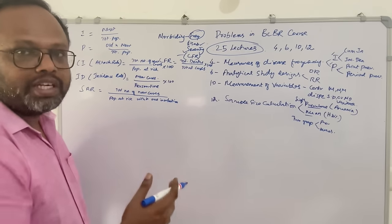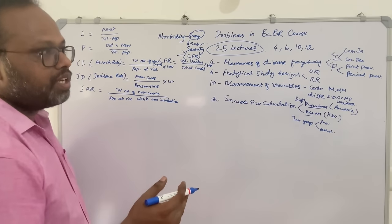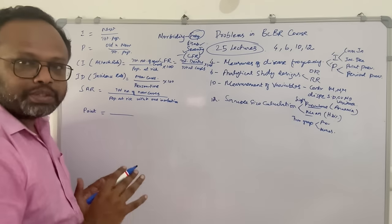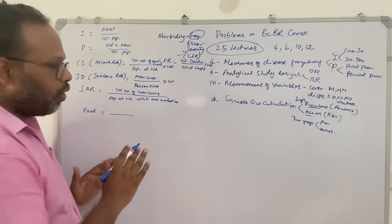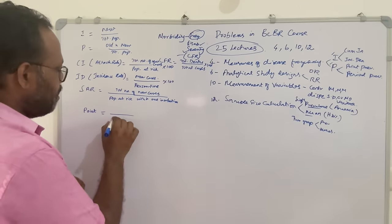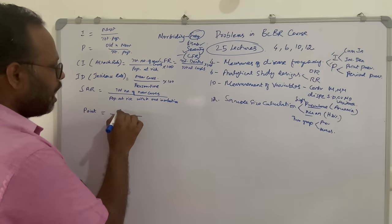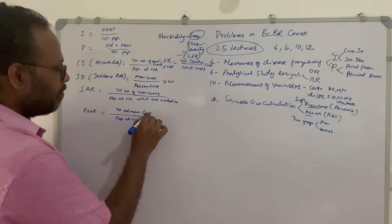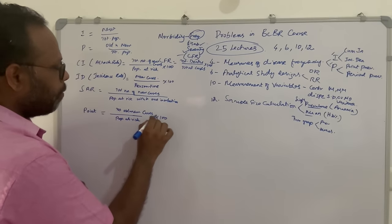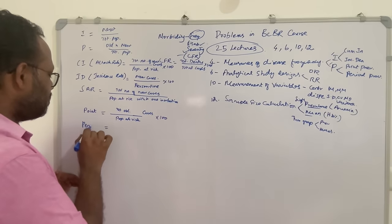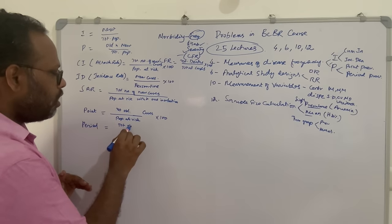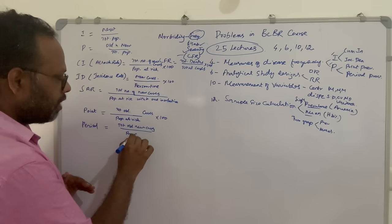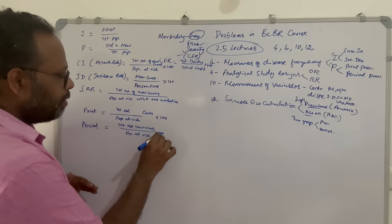CFR or case fatality rate is considered the killing power or severity parameter of the disease. Moving to prevalence parameters — point prevalence and period prevalence. Point prevalence is like a snapshot at a point in time, such as at the beginning of the year: how many cases are there? The denominator is population at risk and total old and new cases at that point in time is the point prevalence.